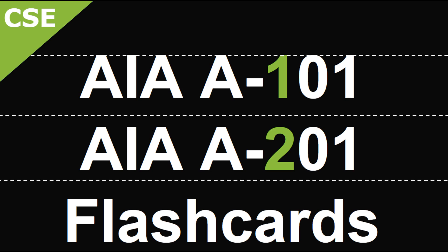What are two important dates expressed in the AIA A101 contract? Two important dates expressed in the A101 contract: number one, date of commencement of work; number two, date of substantial completion.